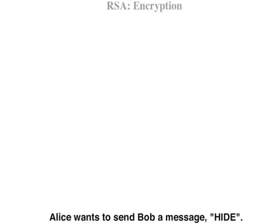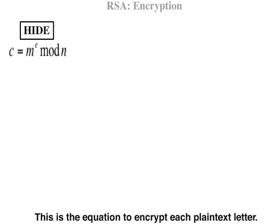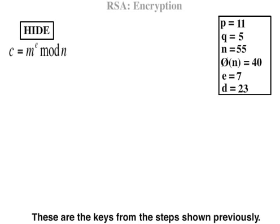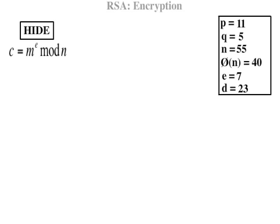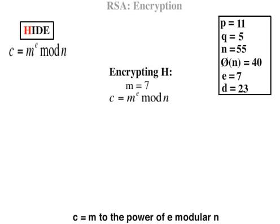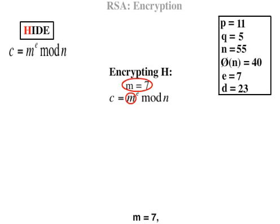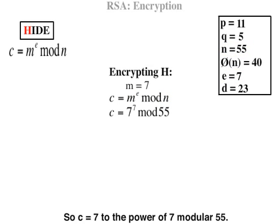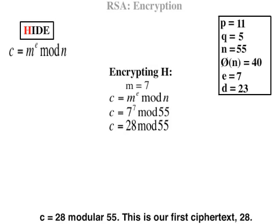RSA encryption. Alice wants to send Bob the message 'Hide'. This is the equation to encrypt each plaintext letter, using the keys from the steps shown previously. Encrypting H: the numerical representation for H is 7. C equals M to the power of E modular N, where M equals 7, E equals 7, N equals 55. So C equals 7 to the power of 7 mod 55. This is our first ciphertext: 28.